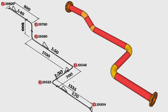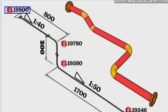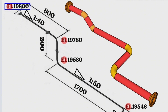Let's start reading this pipe isometric drawing from this flange. The pipeline starting point elevation height is 19,800 millimeters. The pipeline extends 800 millimeters southward and then turns downward at a 45-degree elbow. The elevation of the pipeline's turn point height is 19,780 millimeters.